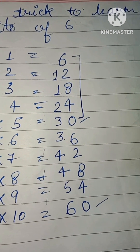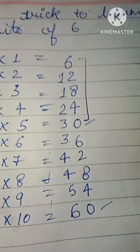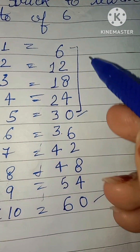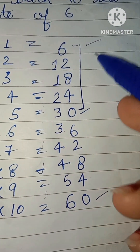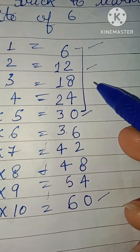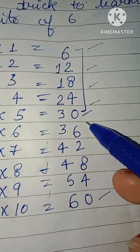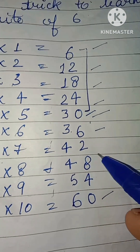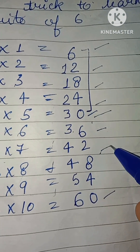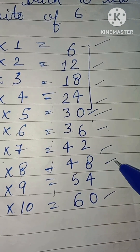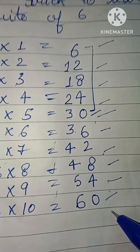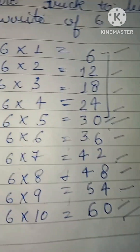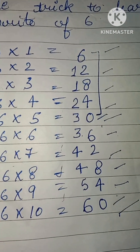Six one is six, six two is twelve, six three is eighteen, six four is twenty-four, six five is thirty, six six is thirty-six, six seven is forty-two, six eight is forty-eight, six nine is fifty-four, six ten is sixty.